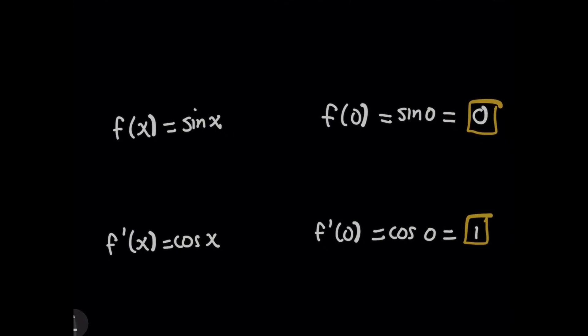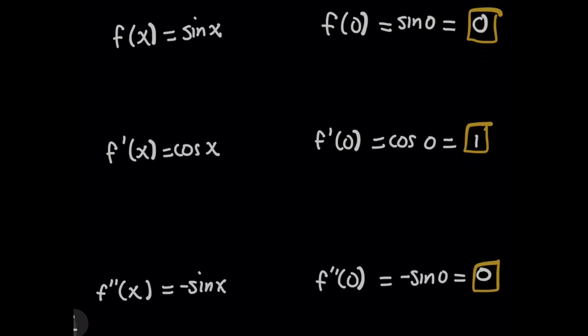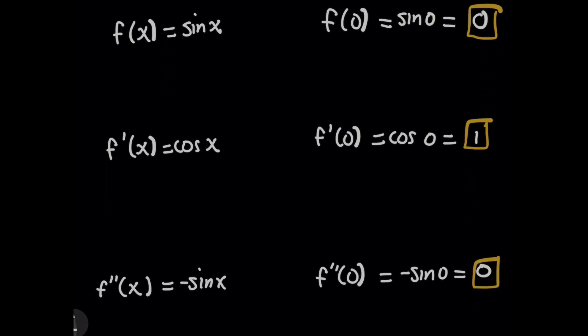Okay, so for f of x equaling sine of x, the first thing you do is you evaluate it at a, which is zero in our case. So f of zero is going to be simply sine of zero, giving the result of zero. We move on by taking the derivative of sine of x, which will give us cosine of x. And when I plug in zero for that, I'm going to get one as my answer.